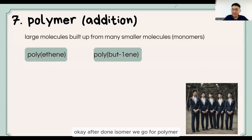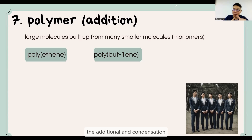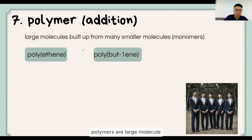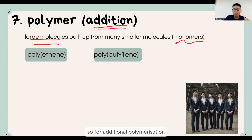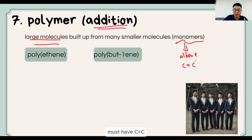After finishing isomers, we move on to polymers. Polymers have two types: addition and condensation. We start with addition polymerization. Polymers are large molecules built up from many smaller molecules called monomers. For addition polymerization, the monomers are always alkenes — they must have a C=C double bond. Let's see some examples, starting with poly(ethene) and poly(but-1-ene).